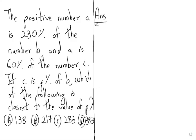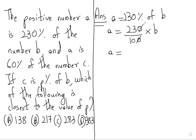First we will write what is given to us. A is 230% of the number B. So we can write A equals 230 over 100, instead of 'of' we write multiply by B. So A equals 230 over 100 times B, we can simplify to get A equals 2.3B.